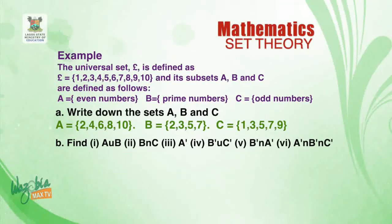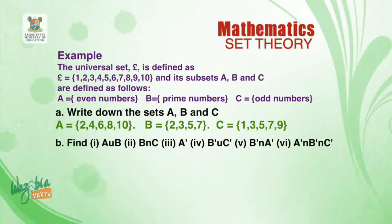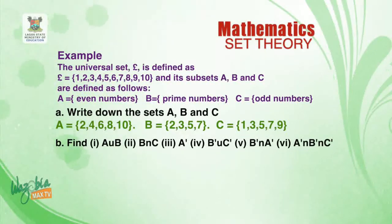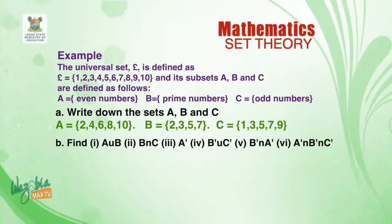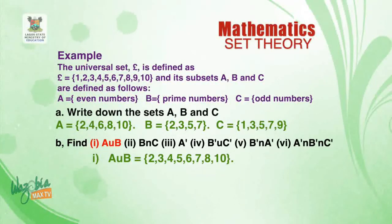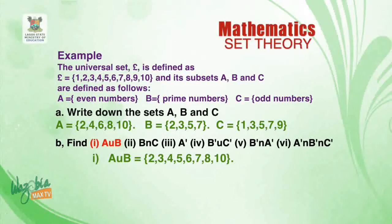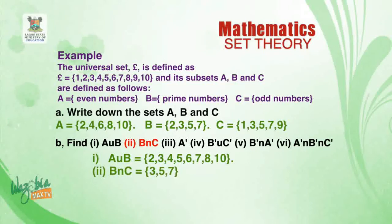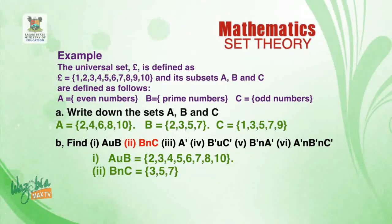Part (b) asks us to find: (1) A union B, (2) B intersection C, (3) A complement, (4) B complement, (5) B complement union C complement, and lastly A complement intersection B complement intersection C complement. For A union B, we create a set containing all elements of A and B without repetition: A ∪ B = {2, 3, 4, 5, 6, 7, 8, 10}. For B intersection C, the common elements between B and C are 3, 5, and 7, so B ∩ C = {3, 5, 7}.